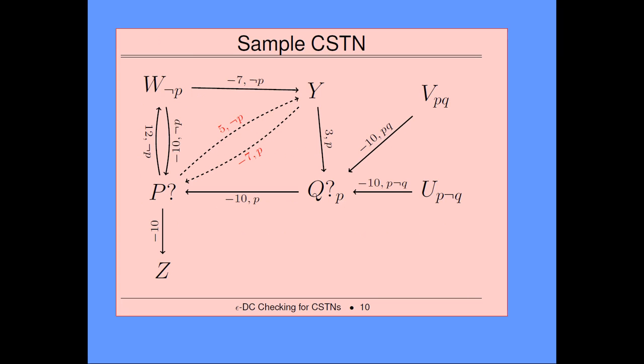In this example, P and Q are the observation time points. The dashed lines are edges generated by our algorithm. If P happens to come out true, then Q would be an applicable time point, and Y has no label so it would also be applicable. But W is only applicable in scenarios where P is false, and V is only applicable where both P and Q are true. These constraints have propositional labels that must be satisfied in those scenarios. Notice there is a negative loop, but the labels are mutually inconsistent, so that doesn't necessarily mean the network is not dynamically consistent. In fact, this network is dynamically consistent.